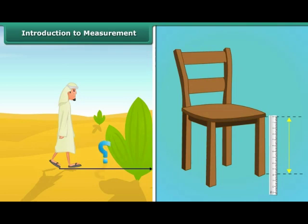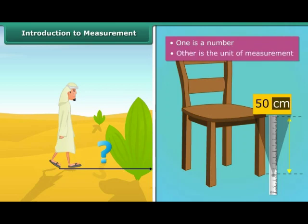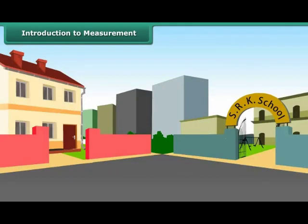When you derive the results of this calculation, you get the measurement in two parts. One is a number and the other is the unit of the measurement. You can also calculate the distance of one place to another. For example, the distance from school to your house.